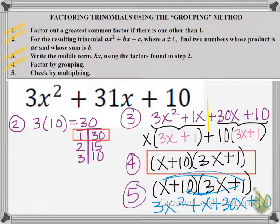Now if I look at the two terms in the middle and I combine like terms, when I add 1x plus 30x, I'm going to get back my original trinomial that had the 31x in the middle. So I know my answer is x plus 10 times 3x plus 1. I know they are the correct factorization of this problem.